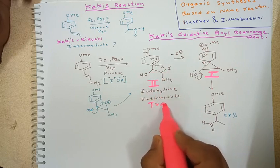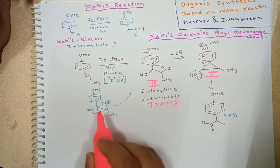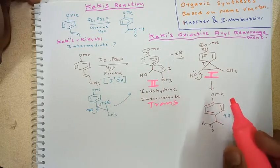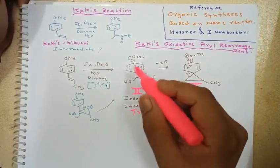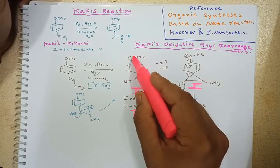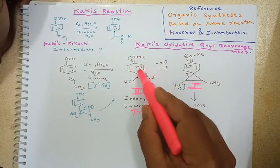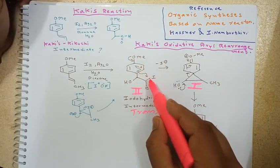This is a donating group that donates electrons here. The ring comes here and the iodide will get removed, so here we get the first intermediate.